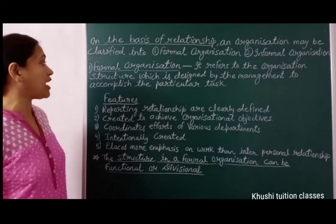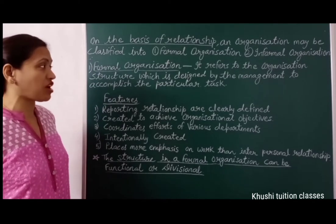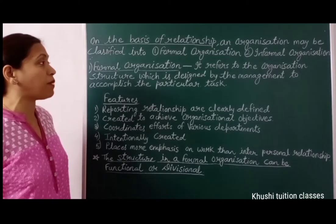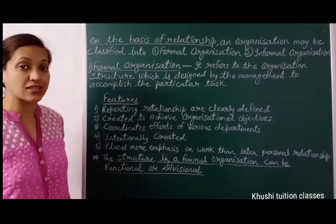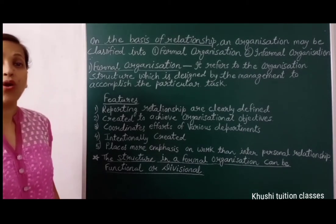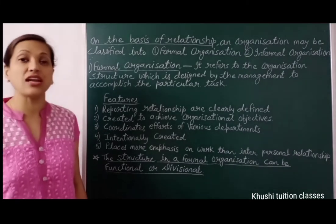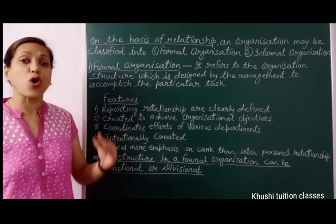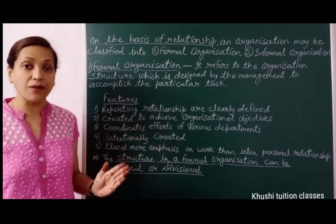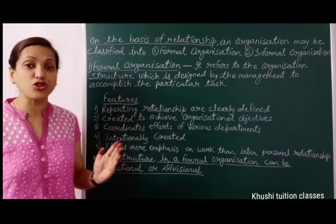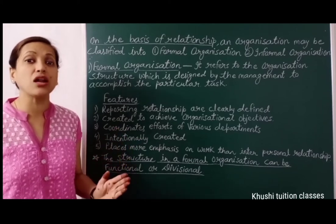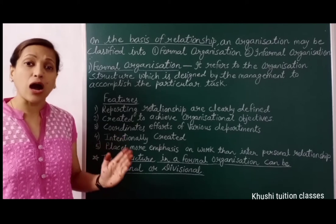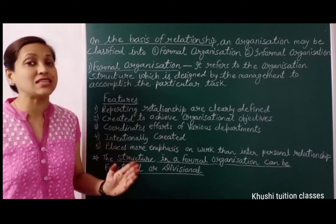Formal organization refers to the organization structure which is designed by the management to accomplish a particular task. It is a kind of structure which the top management decides — every employee's job position, authority, responsibility, accountability, and relationship is decided.